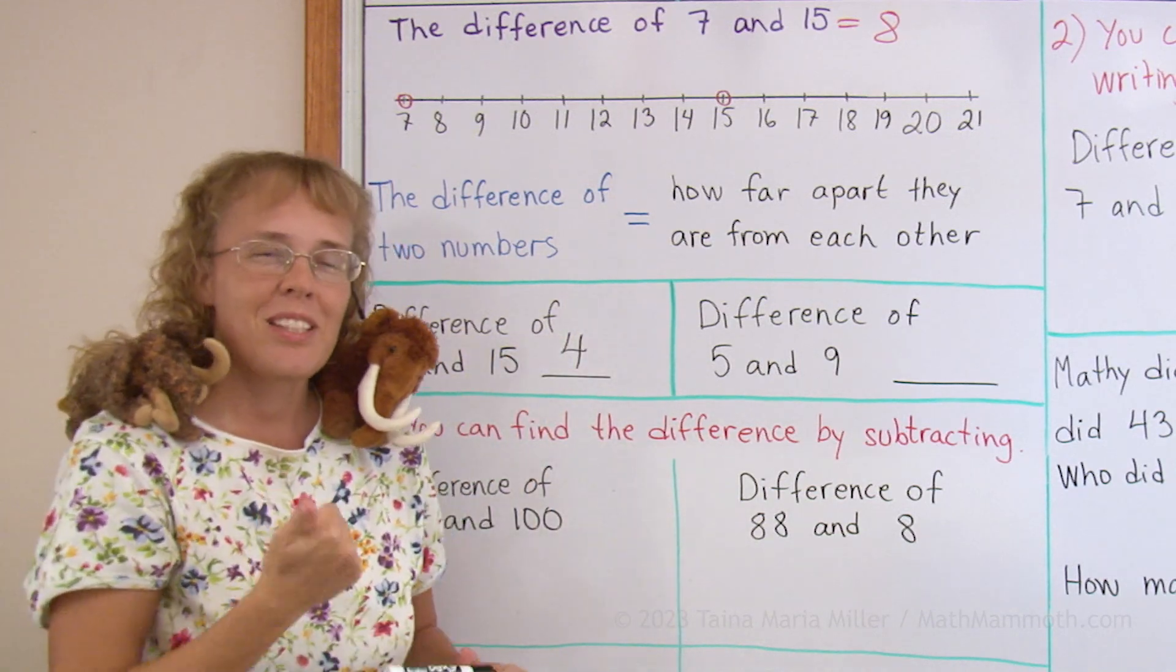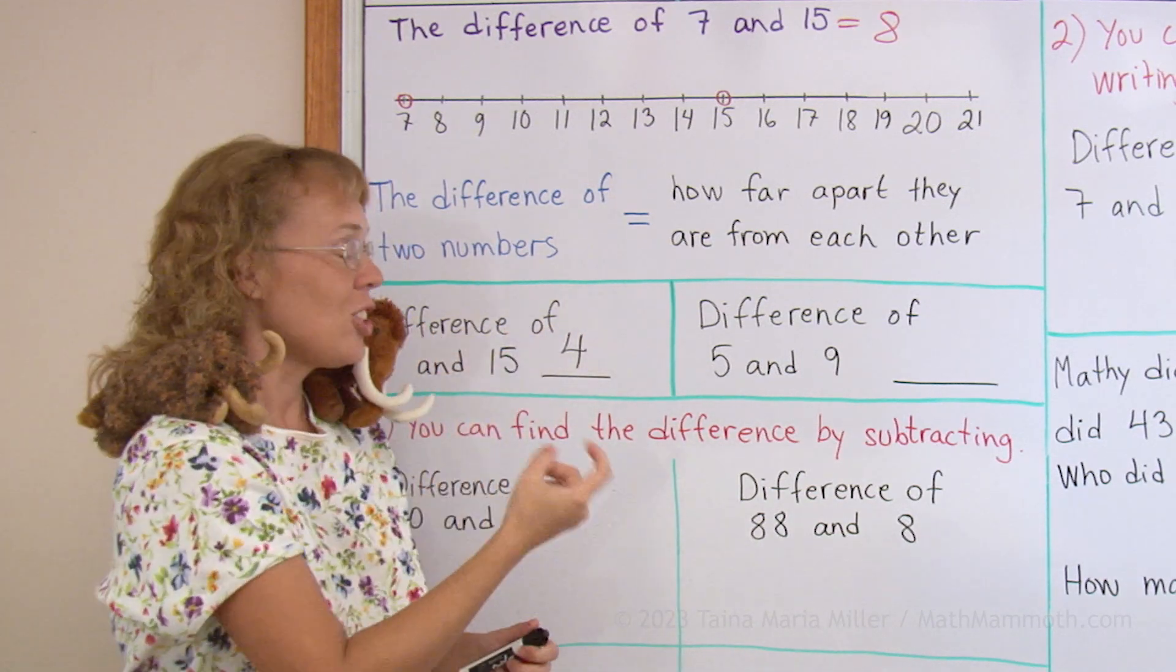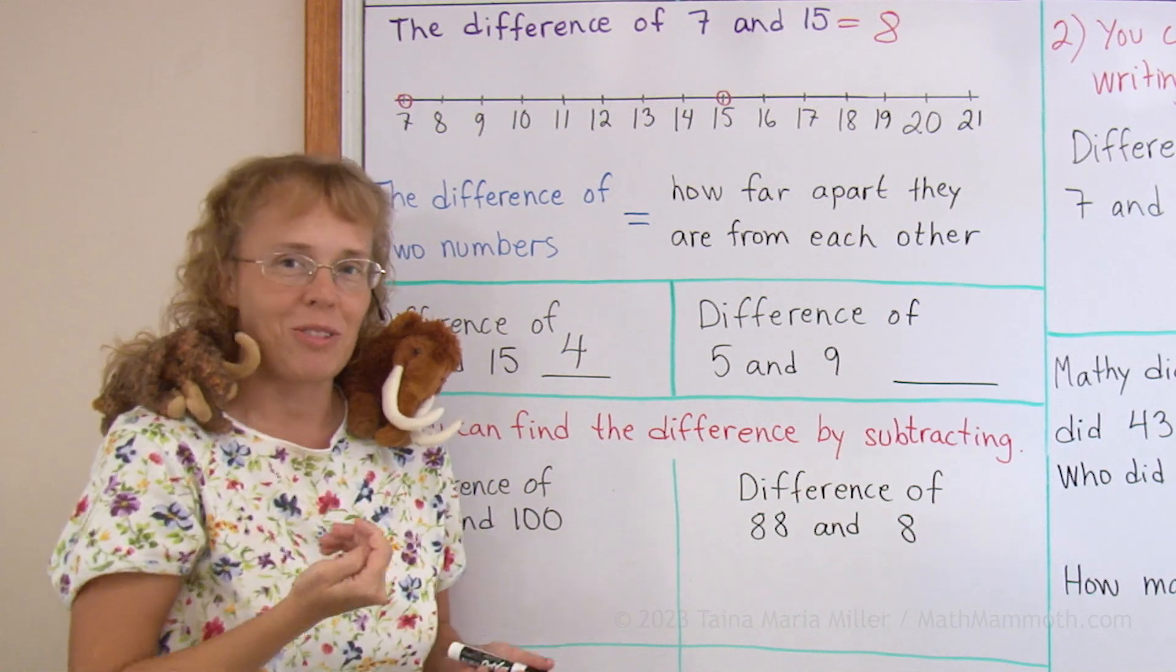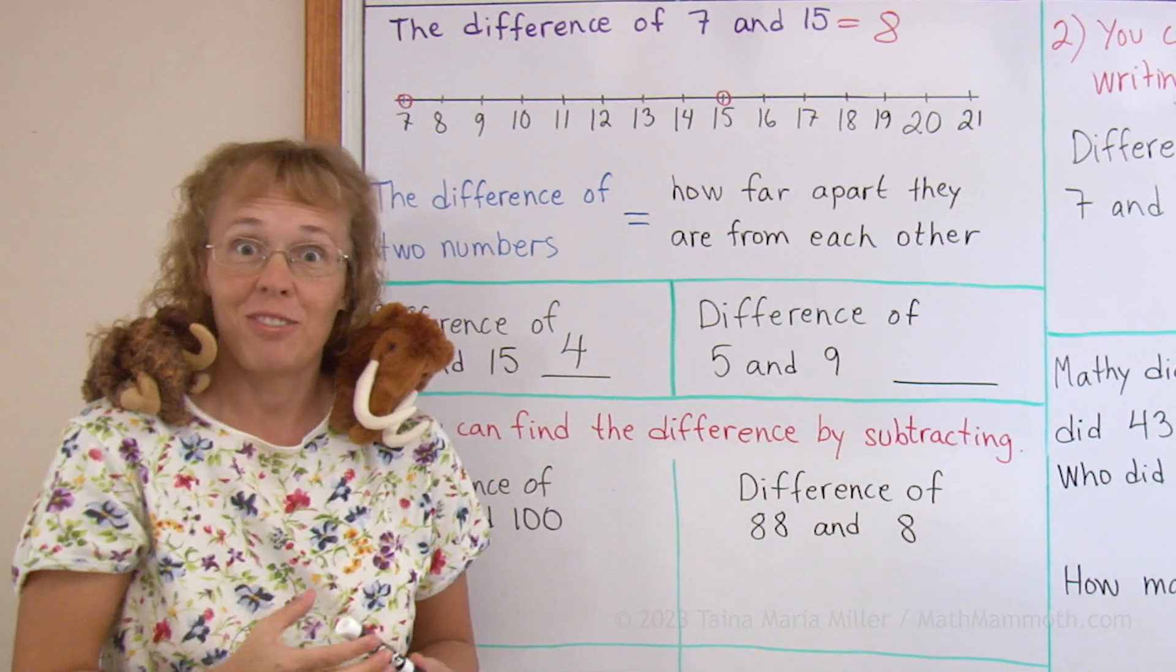Difference of 5 and 9, the same. I don't have a number line to reach down to 5 but I can count from 5 up to 9 and get, again, 4 steps.